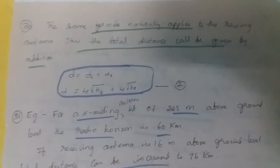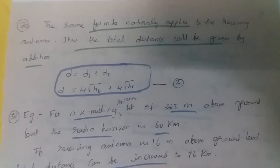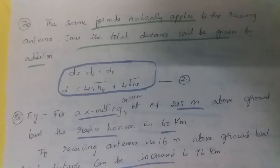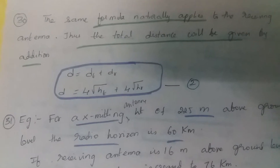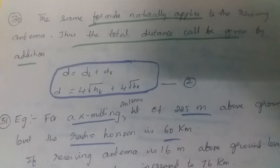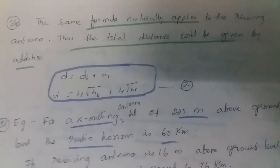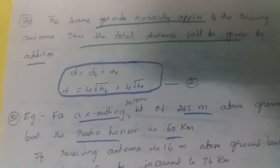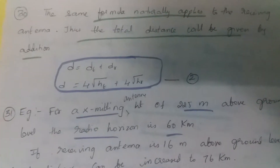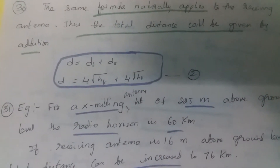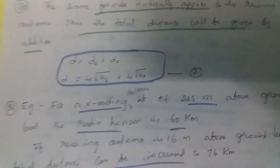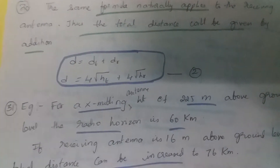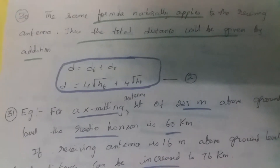The same formula naturally applies to the receiving antenna. Thus, the total distance is given by d = dt + dr, where d = 4√ht + 4√hr. So the distance to which signal communication happens depends on the height of the transmitting antenna and the height of the receiving antenna. The more the transmitting antenna height and the more the receiving antenna height, the more distance you can transmit the signal.